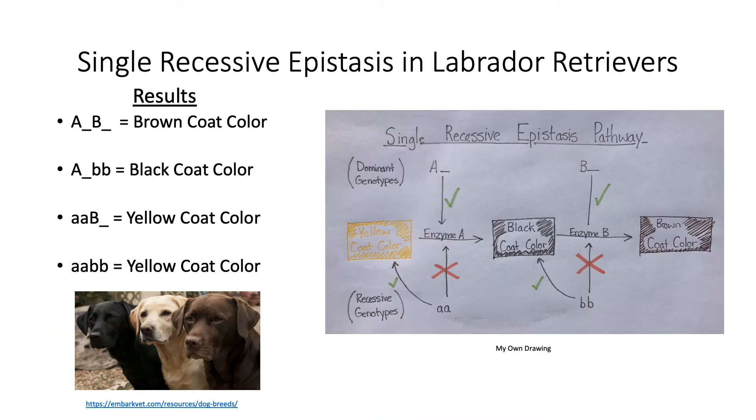In single recessive epistasis, if the first locus has a homozygous recessive allele, it masks the expression of the second locus allele by not allowing enzyme A to be produced. In other terms, if the recessive genotype of aa is present, it stops the pathway from continuing, as seen in the diagram, and returns back to the yellow coat color trait to be expressed.